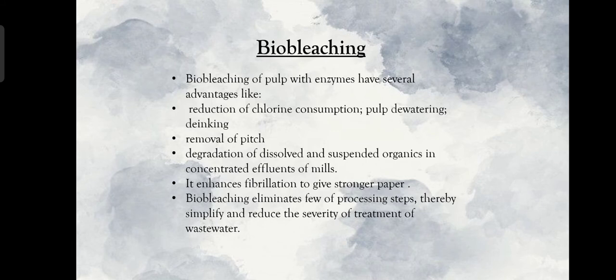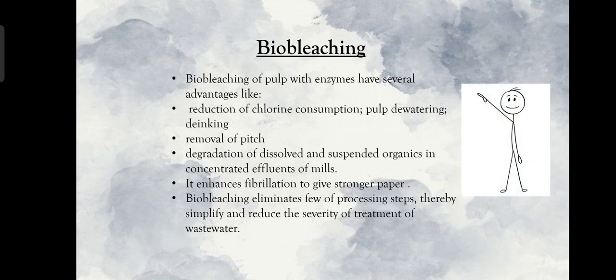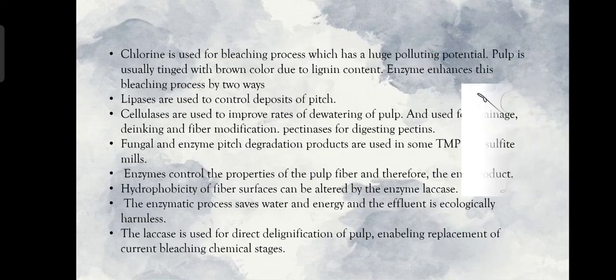Bio-bleaching of pulp with enzymes has several advantages, including reduction of chlorine consumption, pulp dewatering, de-inking, removal of pitch, and degradation of dissolved and suspended organics in concentrated effluents of mills. It enhances fibrillation to give stronger paper. Bio-bleaching eliminates some processing steps, thereby simplifying and reducing the severity of treatment of wastewater.